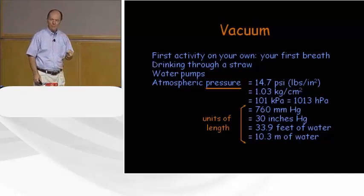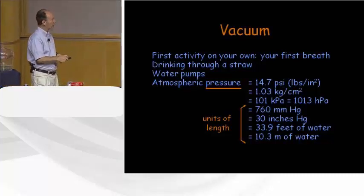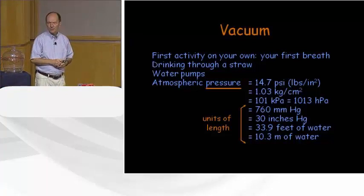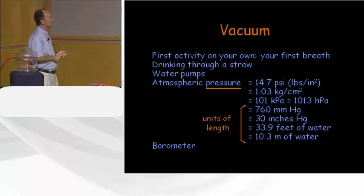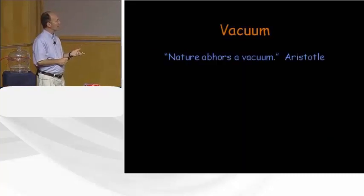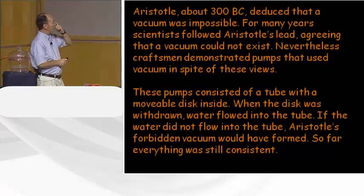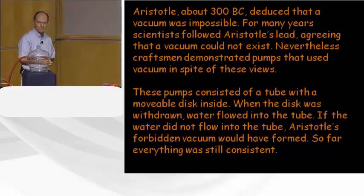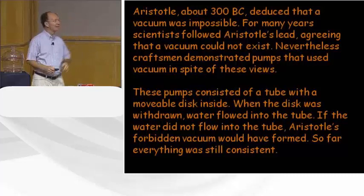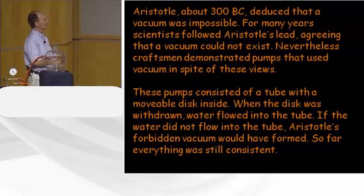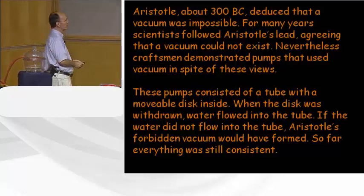Atmospheric pressure is a force per unit area, but here we have units of length to describe pressure. That comes from a barometer invented in the 1600s. About 300 BC, Aristotle deduced that a vacuum was impossible — in those days, science was done by deduction, not experiment. For many years scientists followed Aristotle's lead. Nevertheless, craftsmen demonstrated pumps that used vacuum in spite of these views, so science doesn't always get it right.